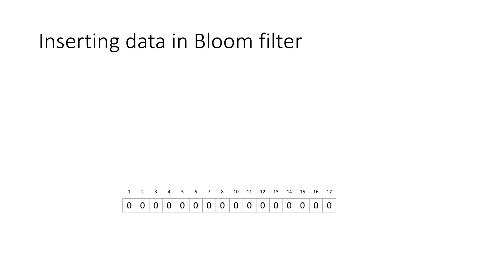Suppose we are implementing an application to find out if a username is already used or if it can be used by a newly registering user. We are just starting the system and we want to store 'data.sevi' as a username. We pass it through h1 and it returns 1, so we set the first bit to 1. Then we pass data.sevi to h2, it returns 4, so we set the fourth bit to 1.